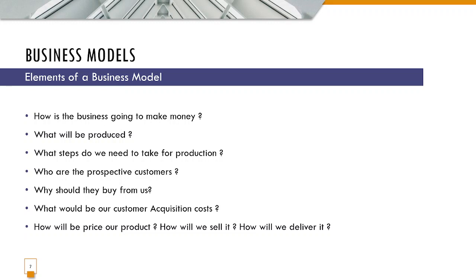We need to answer how we are going to sell our product — what kind of channel are we going to use. Are we going to sell directly to the customer, or are we going to have some agent who arranges the sale? Are we going to use a broker or agent to arrange the sale? These are the elements of a business model — these are the questions that the business model will try to answer.